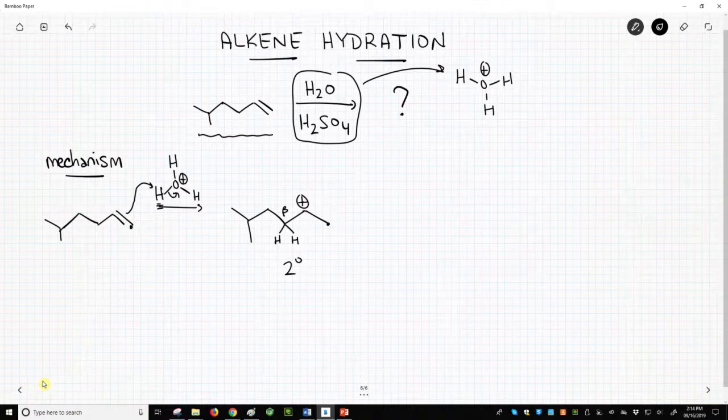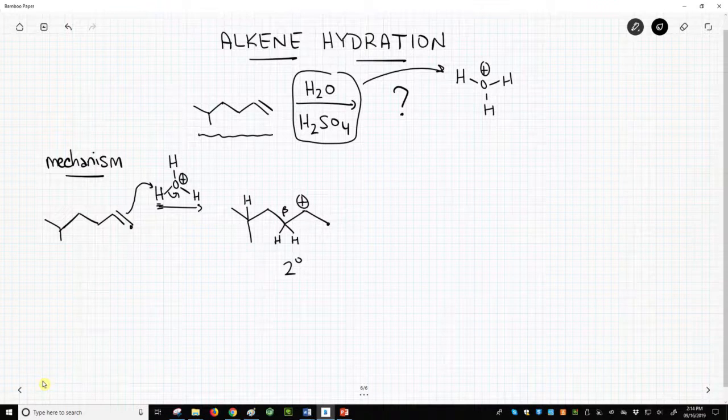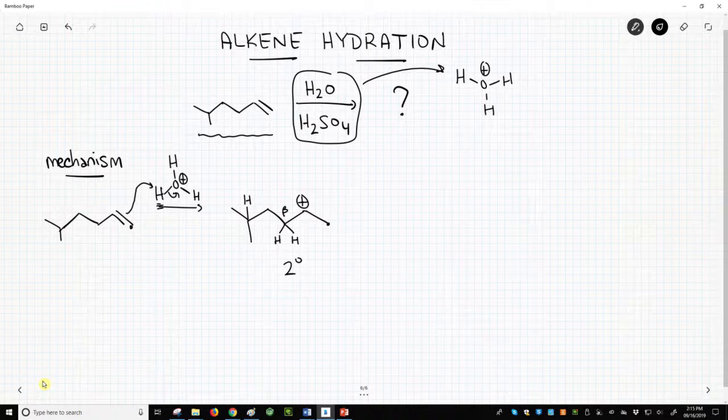Why not shift this hydrogen to make a tertiary carbocation? It's too far away. It needs to be a beta-hydrogen. So a nucleophile will attack the carbocation.